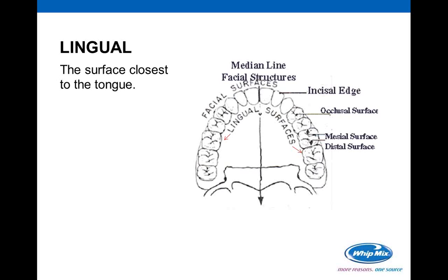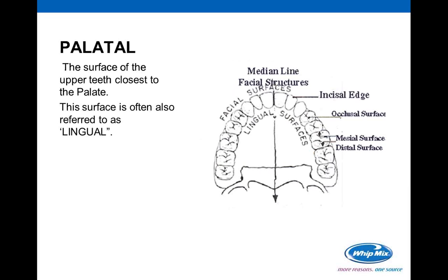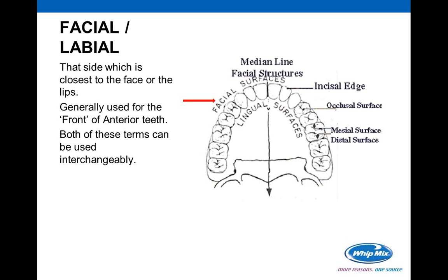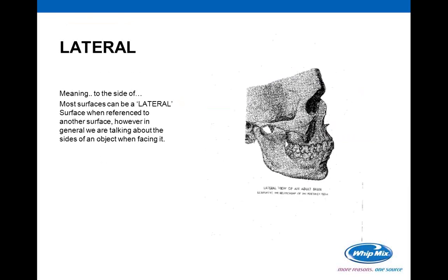The lingual surface is the surface closest to the tongue. On upper teeth it can also be referred to as the palatal surface since it's closest to the palate — those terms may be used interchangeably. The buccal surface is the side of the tooth closest to the buccinator muscle — the outside surface of posterior teeth. The facial or labial surface is the surface contacting the face or lips. Lateral simply means to the side of.